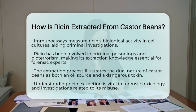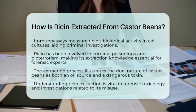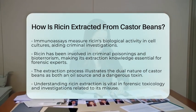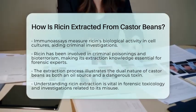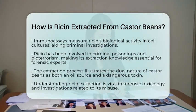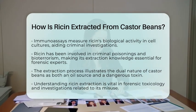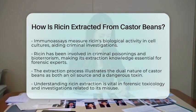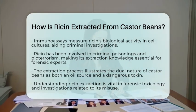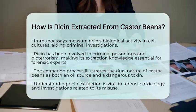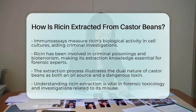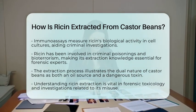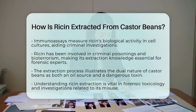In summary, the extraction of ricin involves crushing castor beans, mixing the mash with water, filtering to separate the liquid, and using solvents for purification. This process highlights the dual nature of castor beans, which can be both a source of oil and a deadly toxin. Understanding this extraction process is key in forensic toxicology and criminal investigations involving ricin.